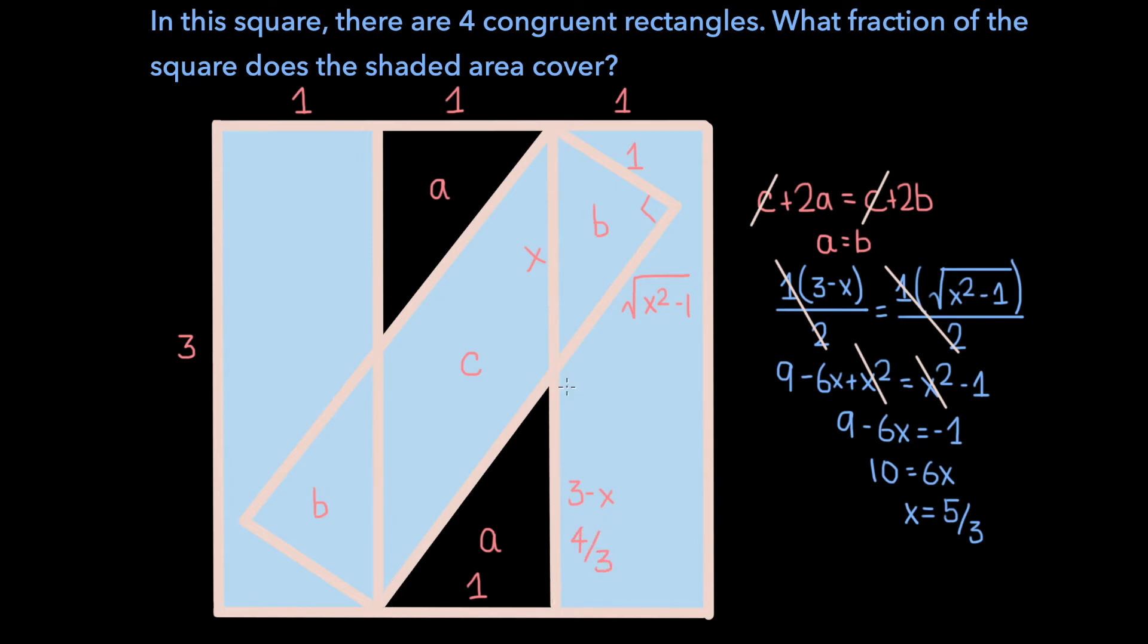And so the area of just one of these triangles is 1 times 4 thirds over 2, which is 2 thirds.